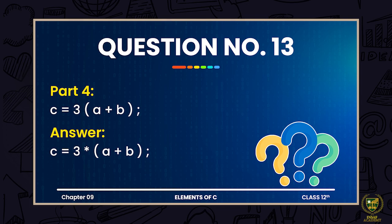The next expression: c = 3(a + b). We know from mathematics that 3 will multiply both a and b — the distributive rule applies, giving 3a + 3b. But 3a means 3 multiplied by a, and 3b means 3 multiplied by b — which must be explicitly specified here. So the correct expression is: c = 3 * (a + b) — that is now a valid expression.